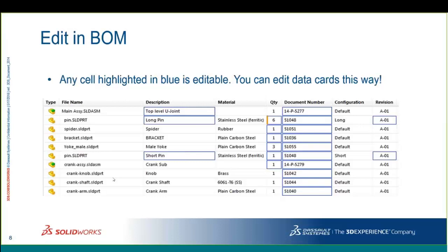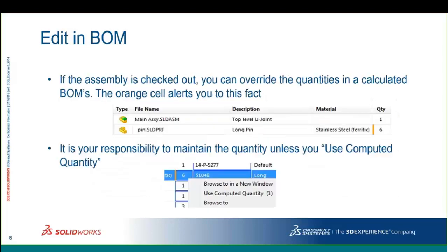Just a quick review: make sure you're looking at the Latest version — that's when most fields turn blue and become editable. If you're looking at As-Built, it shows what the file looked like the last time it was saved in SolidWorks. On quantity overrides: once you override, the cell turns orange. If you ever want to go back, right-click and choose "Use BOM quantity." It's your responsibility if you've done an override to keep that number up to date — PDM says if you want to override it, that must be yours.